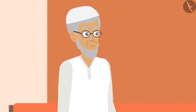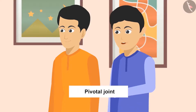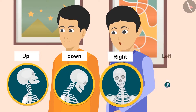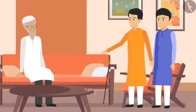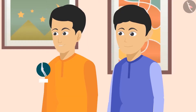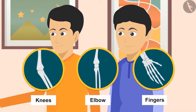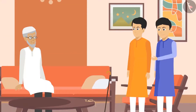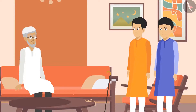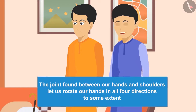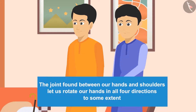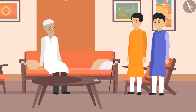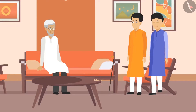'Now tell me which joint is helpful in which kind of movement?' 'Chacha ji, we can rotate our neck left, right, up, and down with the help of the pivotal joint. Hinge joints work exactly like the opening and closing of doors — these are found in our knees, elbows, and fingers, and allow movement in only one direction. At the ball and socket joint, we can move up and down or left and right. The joint between our hands and shoulders lets us rotate our hands in all directions. We can also move our legs left, right, backward, and forward, though not as flexibly as the shoulder.'